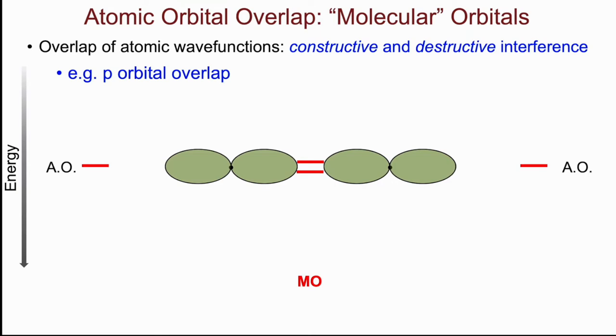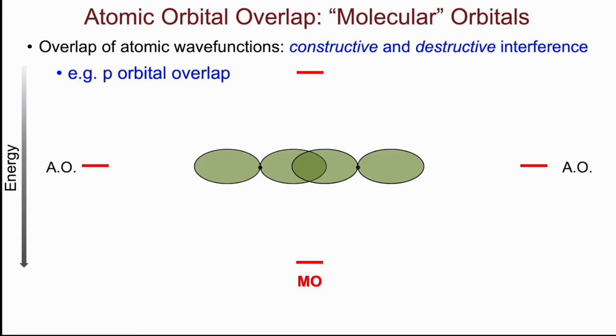Now as the two atoms approach each other, we will see that their atomic orbitals will overlap, and as a result, through either constructive or destructive interference in that region of overlap, the molecular orbitals formed can be of lower energy, more stable, or of higher energy, less stable.